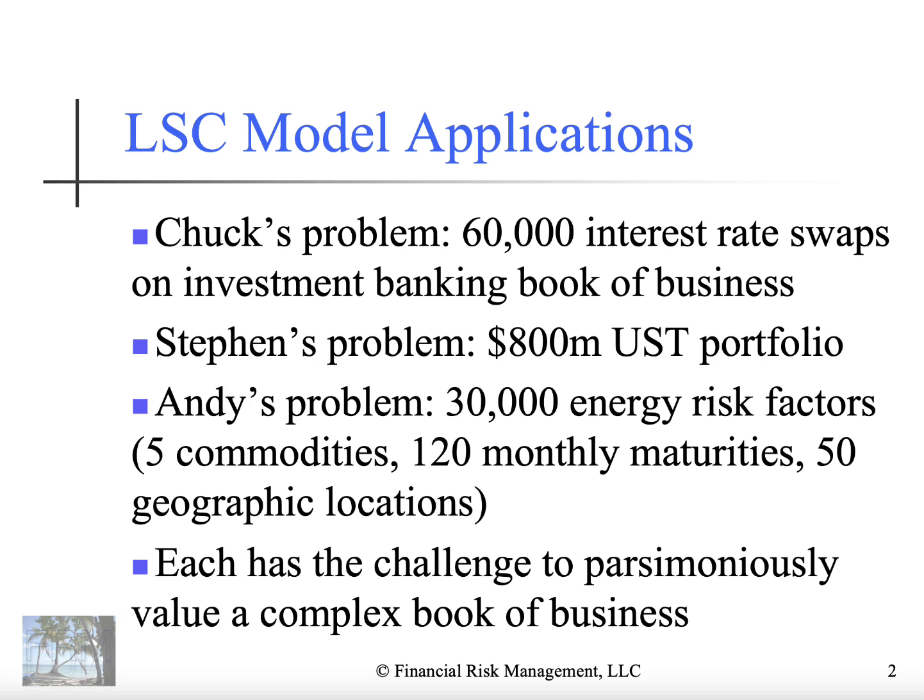Stephen's problem: he's a commercial banker managing an investment portfolio of about $800 million in U.S. treasuries spanning a wide variety of maturities — treasury bills, which are discount instruments, to treasury notes that mature over the next five to seven years. With many different treasury instruments, how do you understand the effects of different interest rate changes on the U.S. treasury portfolio?